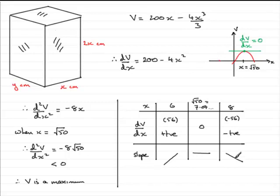So, you can see that what we've got is a maximum point. The curve would come round like this and it would be a maximum point at x equals root 50. So, that's the gradient version. So, we could say therefore v is a max.